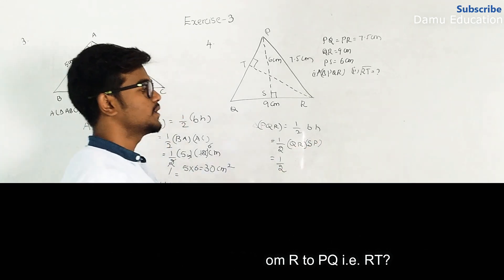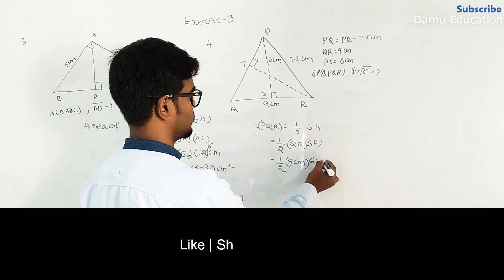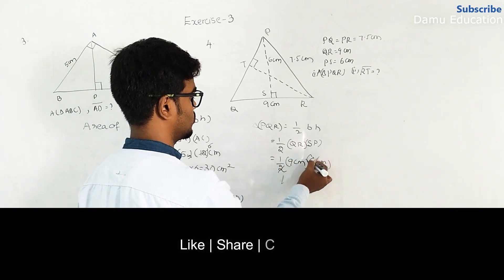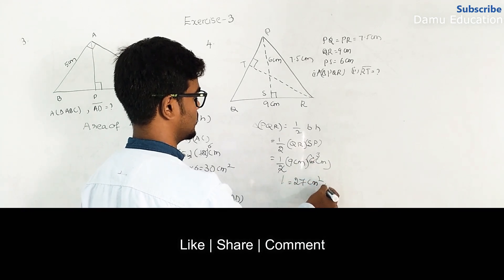So half into QR is 9 cm, then SP is 6 cm. Then 2 times 3 is 27 cm squared.